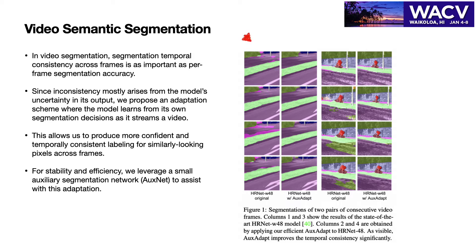For example, those places pointed to by the red arrows are temporally inconsistent over time. Our AuxAdapt method can improve the temporal consistency quite a lot, as we show in columns 2 and 4.